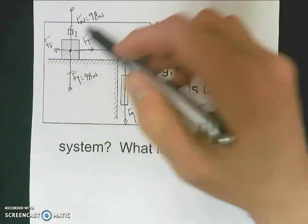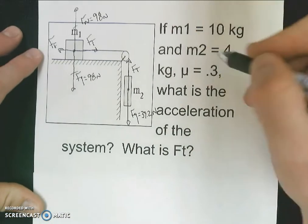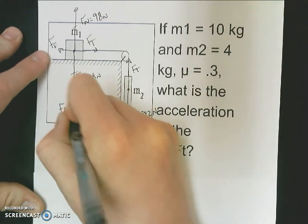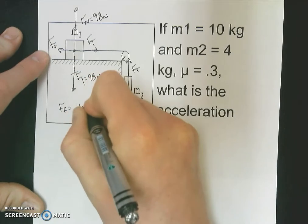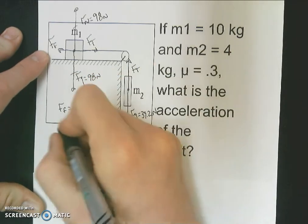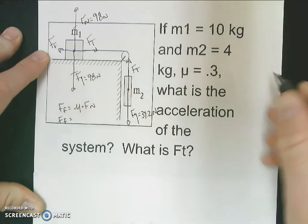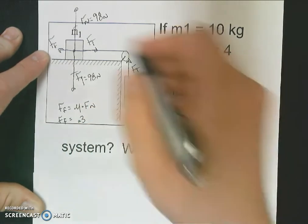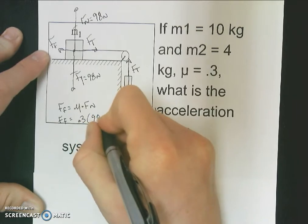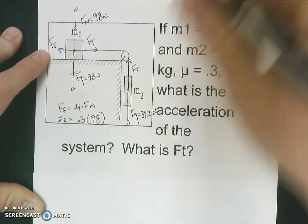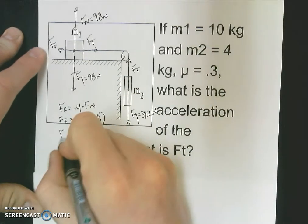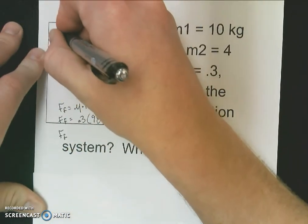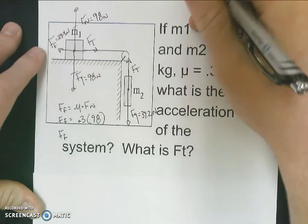The force of friction: if I want to find the force of friction and I have a coefficient of friction, force of friction is going to be equal to mu times force normal. So my force of friction is going to be equal to mu, which is 0.3, times my force normal, which is 98 newtons. So force of friction ends up being 29.4 newtons.